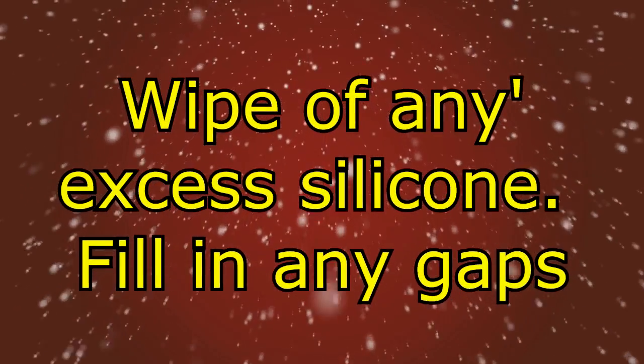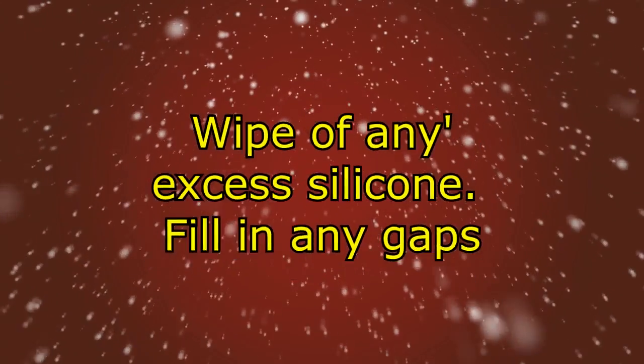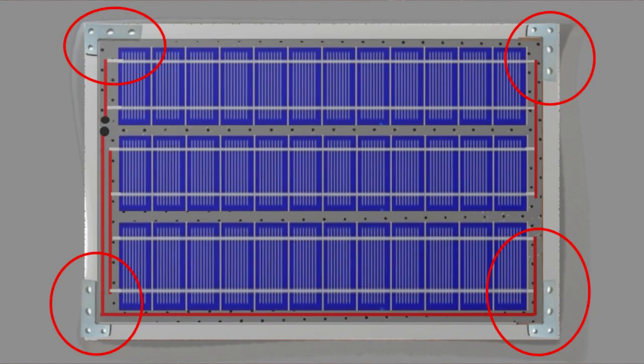You should have your plexiglass sitting on top of your frame now. Wipe off any excess silicone around the edges. Then, take your L brackets and position them on the corners of the frame, as shown.